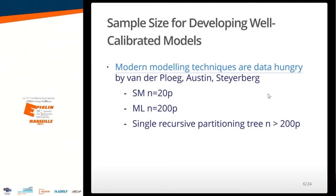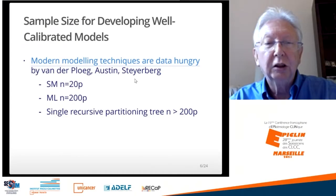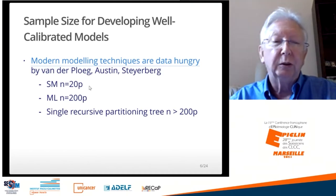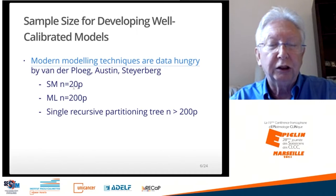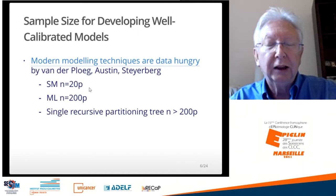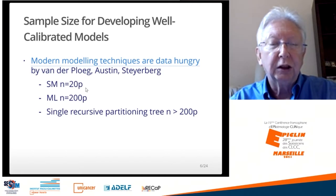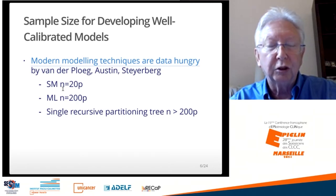When you're developing a complex predictive system, if it's a very complex analytical method, it needs more data than a simple analytic method does. This is summarized beautifully in a paper by van der Ploeg, Austin, and Steyerberg called 'Modern Modeling Techniques Are Data Hungry.' They found that for a typical statistical model with P predictors, all linear, the rule of thumb is you need at least a sample size of 20 times the number of candidate predictors — a very rough rule of thumb, but close to being okay.